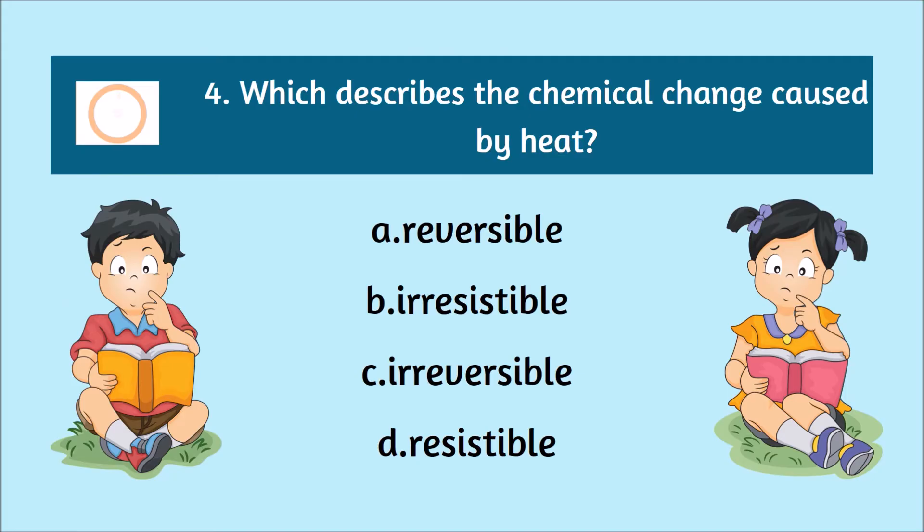Number 4. Which describes the chemical change caused by heat? A. Reversible. B. Irresistible. C. Irreversible. D. Resistible.